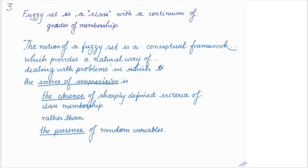So this point which we have discussed here is very important because sometimes there is a confusion regarding fuzzy set and random variables or probabilities. So here that is being emphasized that source of imprecision is not due to random variables, rather the source of imprecision is because there is absence of sharply defined criteria using which membership of any object can be defined in a class.